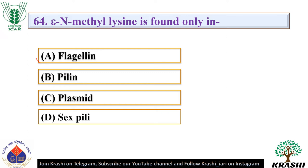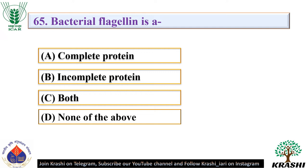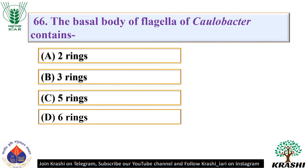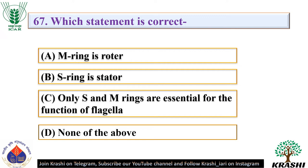Question number 65: Bacterial flagellin is — it is an incomplete protein. Question number 66: The basal body of flagella of Caulobacter contains five rings — that is L, P, E, S, and M. Question number 67: Which statement is correct? The correct answer is option D — none of the above. Because M ring is called stator and S ring is called rotor, and not only S and M but all four rings are essential for the function of flagella.